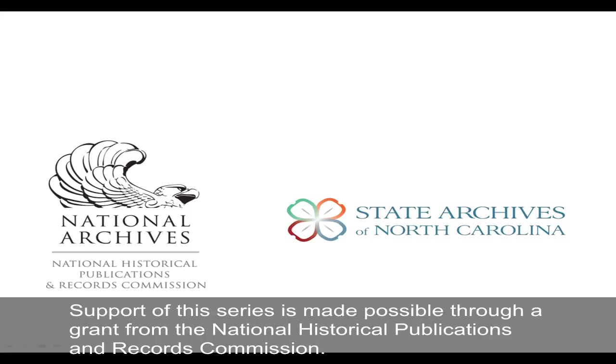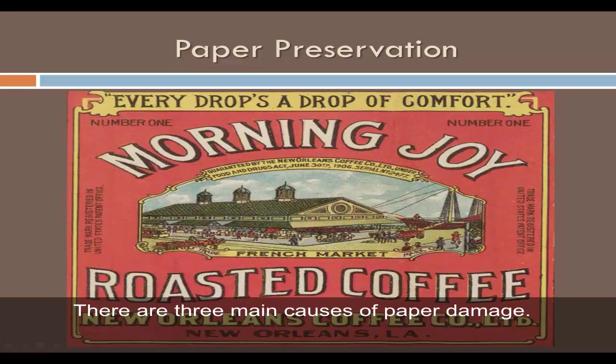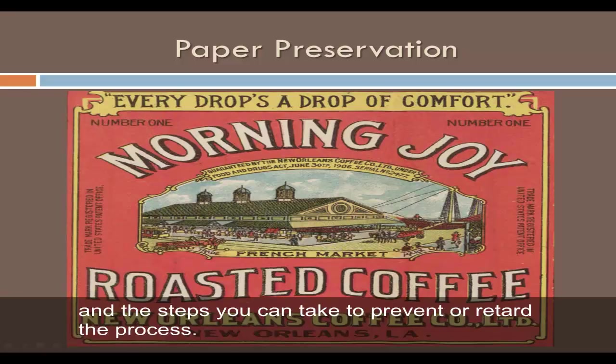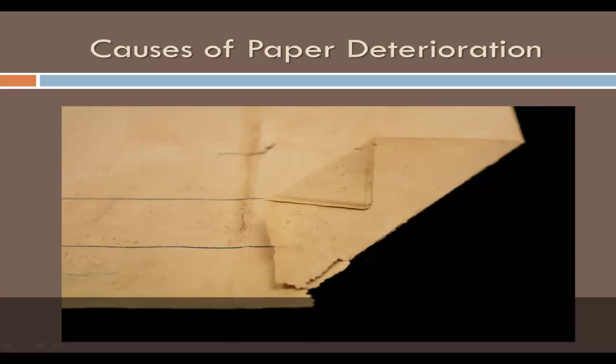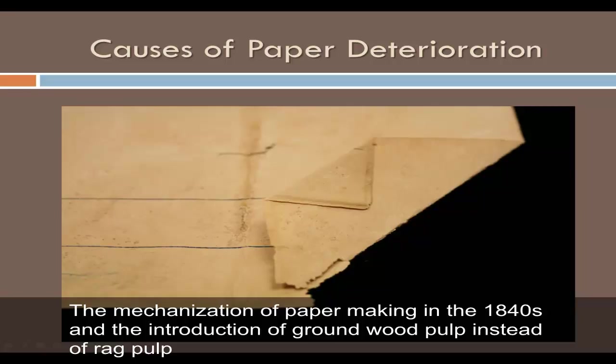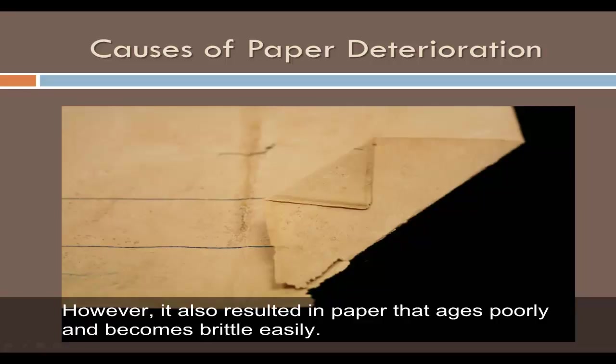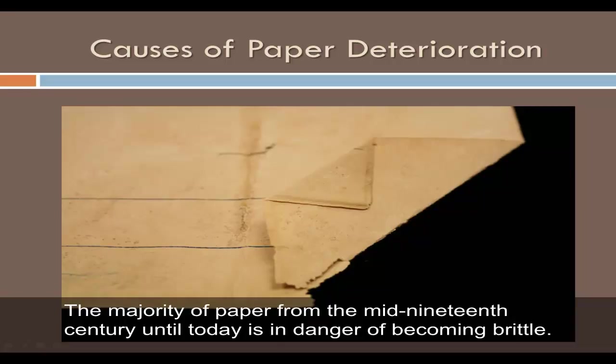Before you can preserve paper, you first need to know how it deteriorates. There are three main causes of paper damage. This tutorial will describe the way paper materials can deteriorate and the steps you can take to prevent or retard the process. The first way paper can deteriorate is inherent vice, meaning problems with how the material itself was created. The mechanization of papermaking in the 1840s and the introduction of ground wood pulp instead of rag pulp made paper cheaper and more accessible. However, it also resulted in paper that ages poorly and becomes brittle easily. The majority of paper from the mid-19th century until today is in danger of becoming brittle.